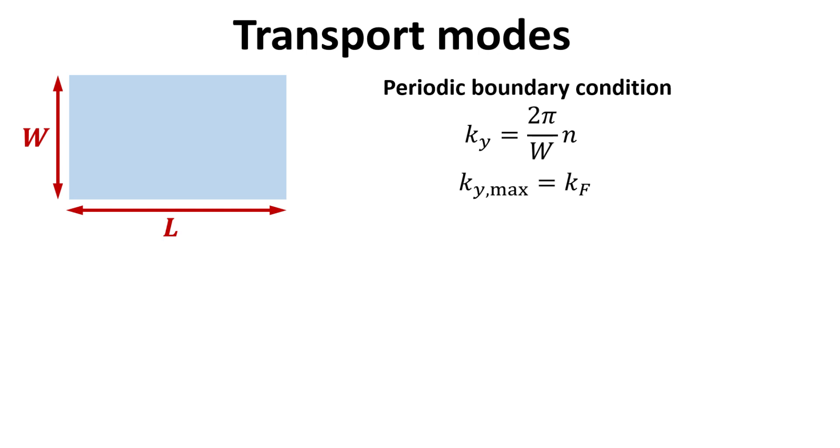We introduce the transverse wave vector ky, which is along the width direction, and transverse to the transport direction. ky is then given by 2 pi times n divided by w, where n is an integer denoting the number of wave cycles that can fit within w. The maximum allowable ky is the fermi wave vector kf.